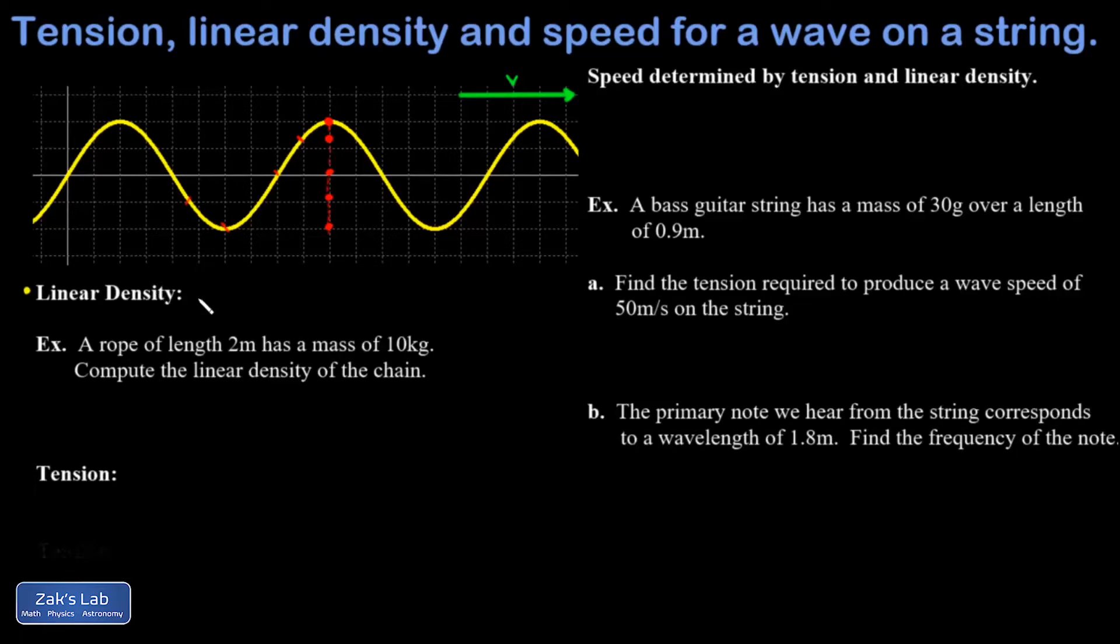To get precise, linear density, normally given by the Greek letter mu, is the mass per unit length on the string. It means the units of linear density are kilograms per meter, instead of like with volume density, that would be kilograms per cubic meter.